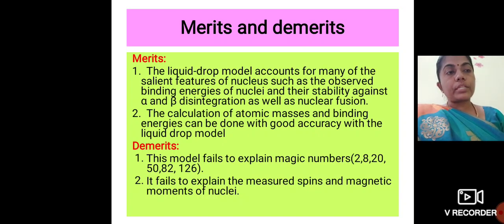Finally, we shall discuss about the merits and demerits of the liquid drop model. First, the merits. The liquid drop model accounts for many of the salient features of the nucleus, such as the binding energy of the nucleus and their stability against alpha and beta disintegrations. It also explains nuclear fission. It leads to the calculation of atomic masses and binding energies with good accuracy using the liquid drop model.